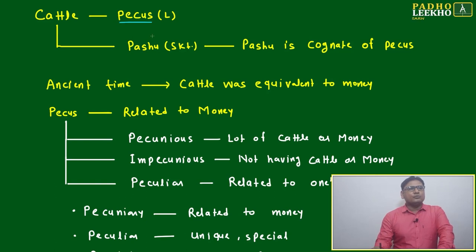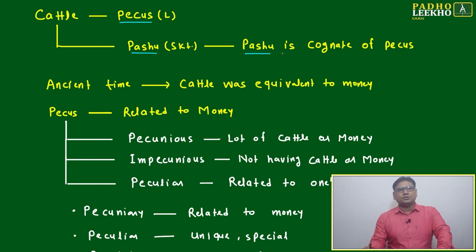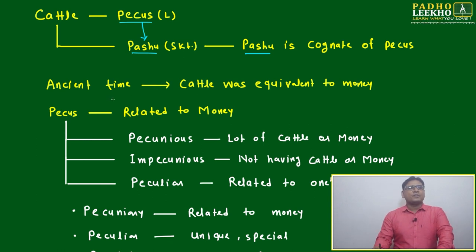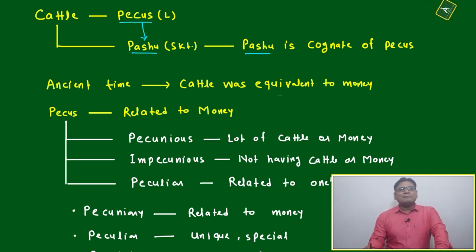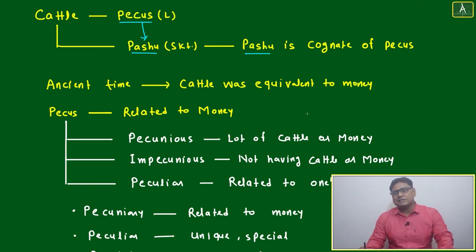The root word for 'cattle' is the Latin 'Pekas'. There is also a Sanskrit word — 'Pashu' — which we already use in Hindi. Pashu is a cognate of Pekas; it is a deviated form of Pekas. In ancient times, cattle was equivalent to money.